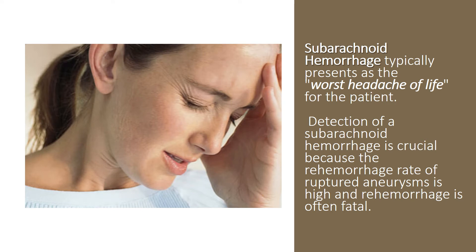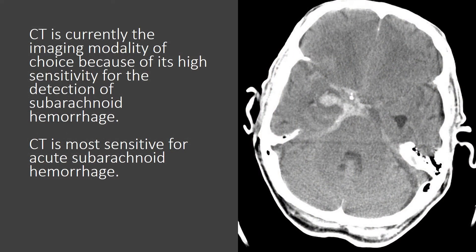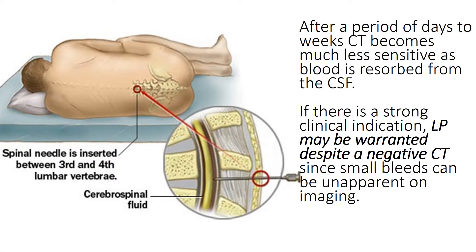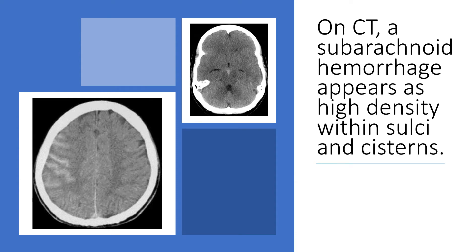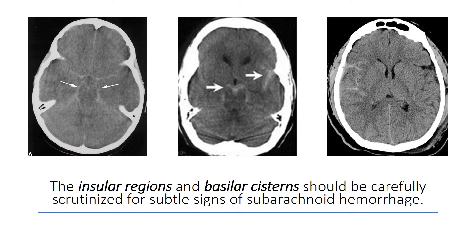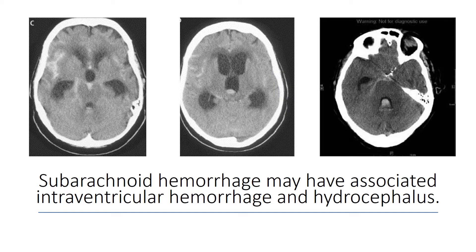Subarachnoid hemorrhage typically presents as the worst headache of life for the patient. Detection of subarachnoid hemorrhage is crucial because the re-hemorrhage rate of ruptured aneurysms is high and re-hemorrhage is often fatal. CT is currently the imaging modality of choice because of its high sensitivity for detection of subarachnoid hemorrhage. CT is most sensitive for acute subarachnoid hemorrhage. After a period of days to weeks, CT becomes much less sensitive as blood is resorbed from the CSF. If there is a strong clinical indication, LP may be warranted despite a negative CT since small bleeds can be unapparent on imaging. On CT, a subarachnoid hemorrhage appears as high density within sulci and cisterns. The insular regions and basilar cisterns should be carefully scrutinized for subtle signs. Subarachnoid hemorrhage may have associated intraventricular hemorrhage and hydrocephalus.